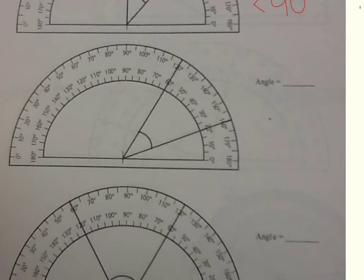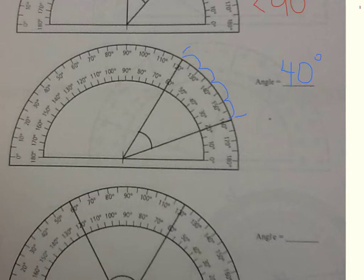Let's look at the next one. How far is it from one side to the other? From here to here. Let's count: 10, 20, 30, 40. So that one is 40 degrees. Classify it — acute, right, obtuse, or straight? Well, it's less than 90 degrees, so that would make it acute. Why? Because it is less than 90 degrees.